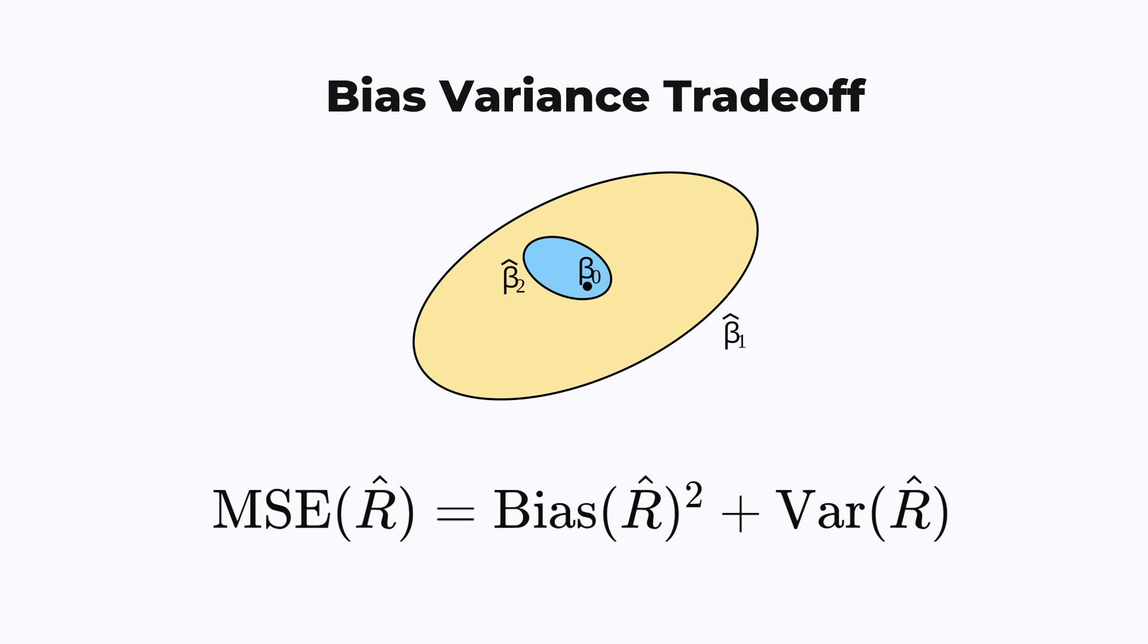Remember that the total error of the estimator, or the MSE, is the sum of the bias and the variance. So what we want actually is to get the most accurate estimator, which might not be the most unbiased one.